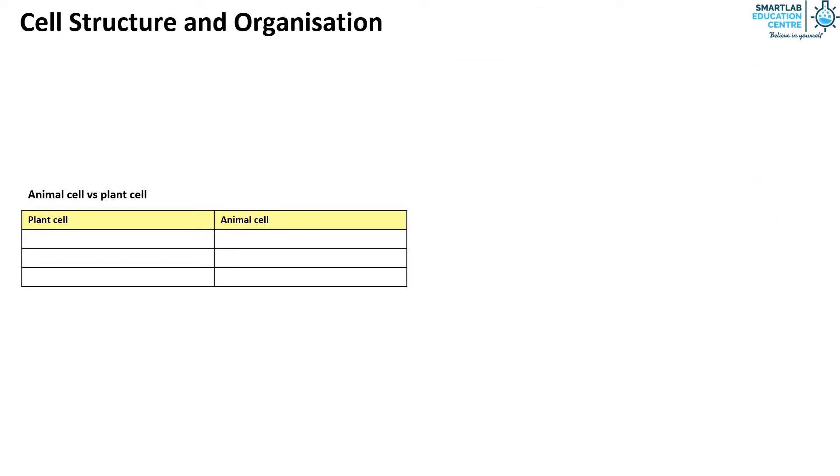Comparing between the animal and plant cell: Plant cells have cell wall but animal cells don't. Plant cells contain chloroplast but animal cells don't. Finally, plant cells have a large central vacuole but animal cells have vacuoles that are small and many.